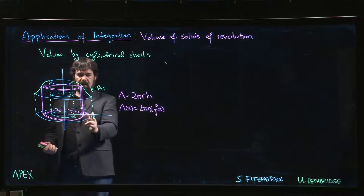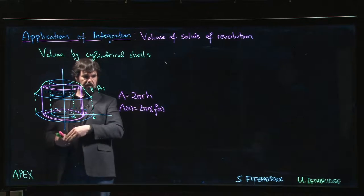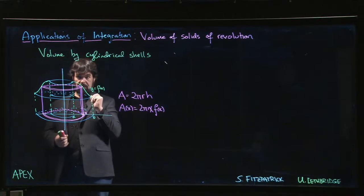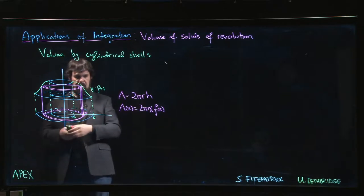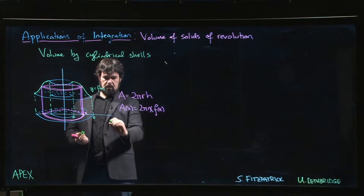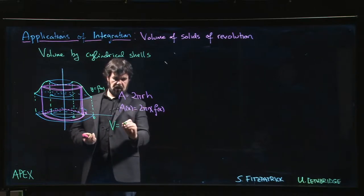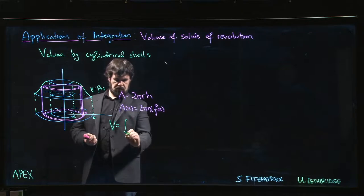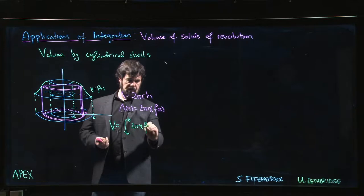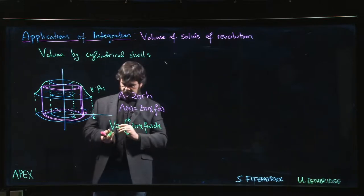For each x value starting at a and ending at b, you get one of these cylinders. The surface area of the cylinder is given by that. Thickening by an amount dx gives you an infinitesimal volume. Integrating should give you the result. So the volume of this solid should be the integral from a to b of 2πx times f(x) times dx.